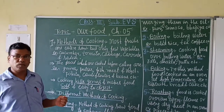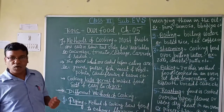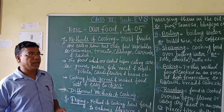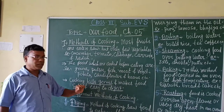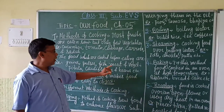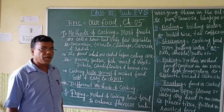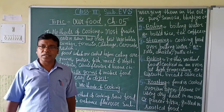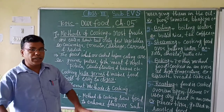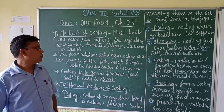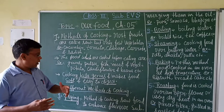We can also cook them. The foods which are cooked before eating include eggs, pulses, fish, meat, and vegetables like potato, cauliflower, and beans. These are the food materials we cannot eat raw — we have to cook them before eating.